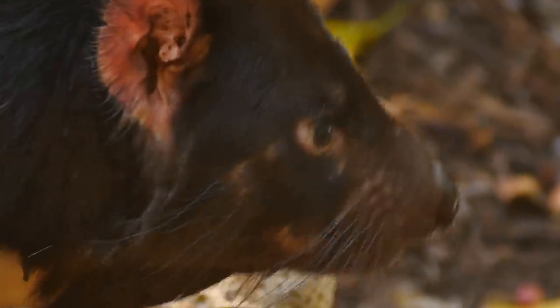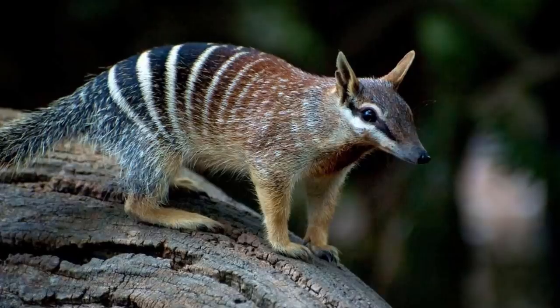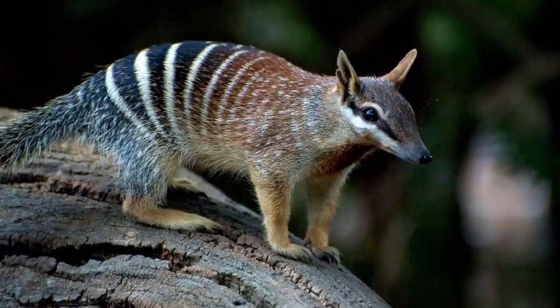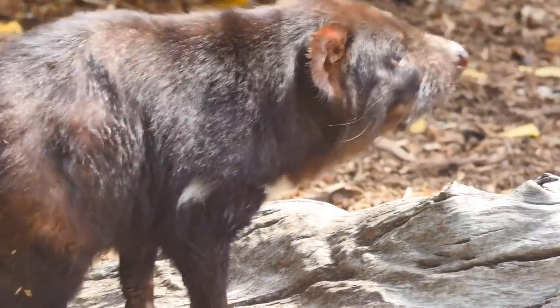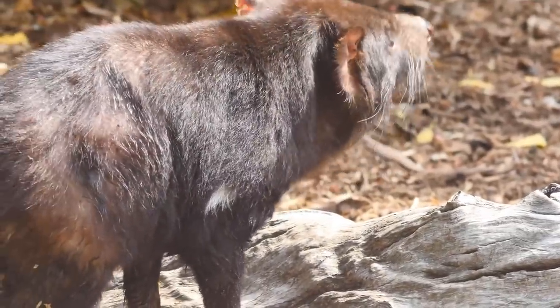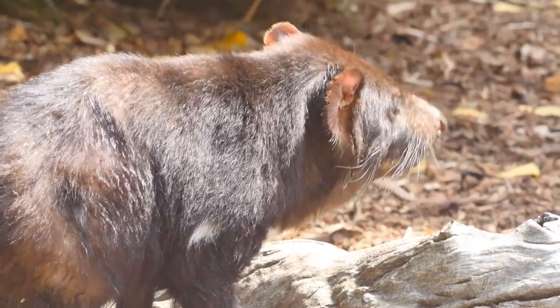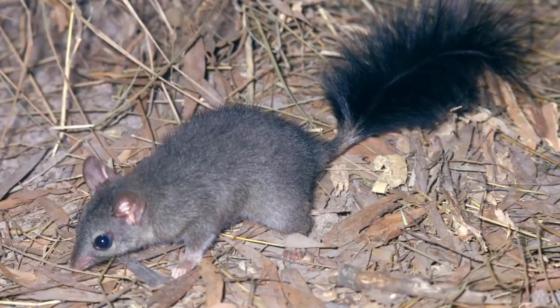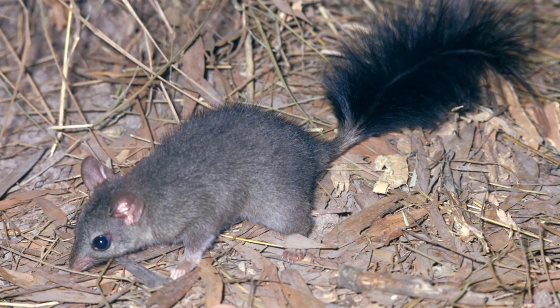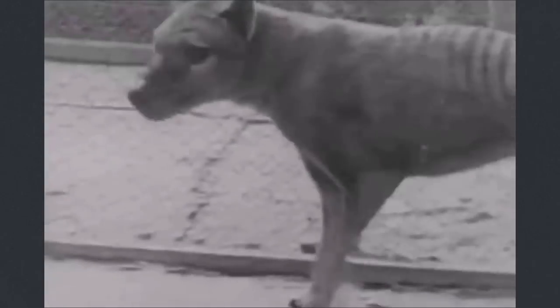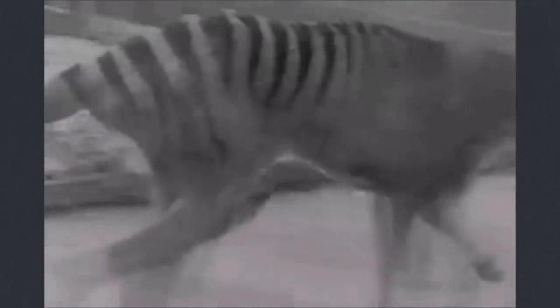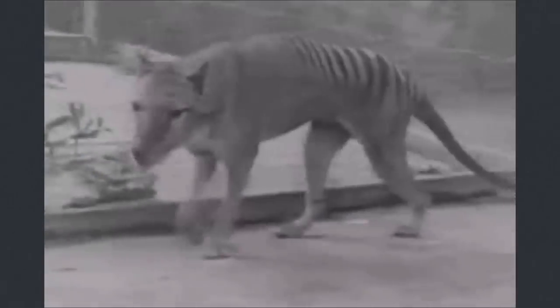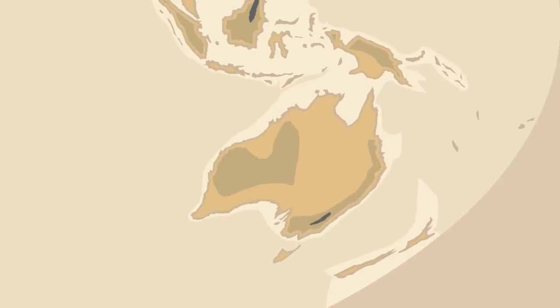These animals occupy many different carnivorous roles across Australia's ecosystems — some being scavengers, others specialised to eat insects. The Dasyeuromorphia are usually quite small, the largest being the Tasmanian devil, about the size of a small dog. In the past, there were larger species that would have hunted larger prey, including the thylacine, or Tasmanian tiger. Although only found on Tasmania since British settlement, both the Tasmanian devil and thylacine bones can be found on the mainland, and thylacine bones have even been found in New Guinea.